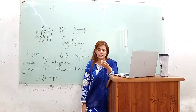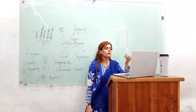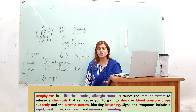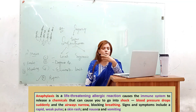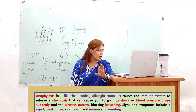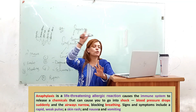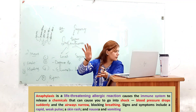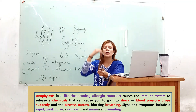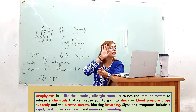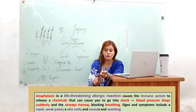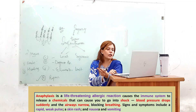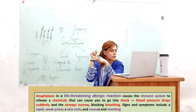Looking at the general definition and pathology, one example of severe harmful inflammation is an anaphylactic allergic reaction. In anaphylaxis, blood pressure drops dramatically, cutting blood supply from the brain. The airways become constricted, making breathing very difficult, and the body gets hot.